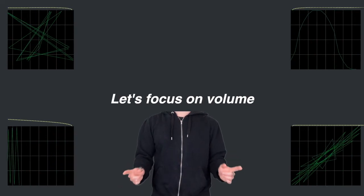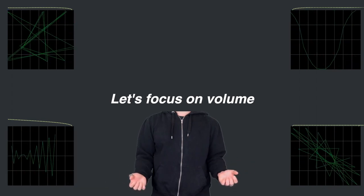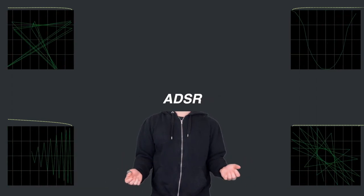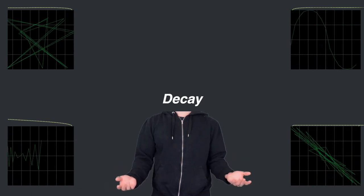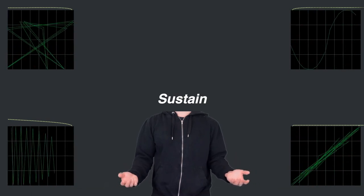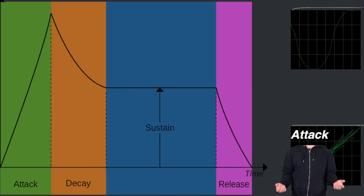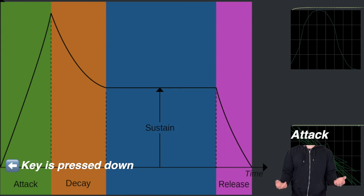But let's focus on volume in this video. Envelope has four common stages called ADSR, which stands for Attack, Decay, Sustain, and Release. Attack is the time it takes for a sound to reach from zero to the peak level after a key is pressed.